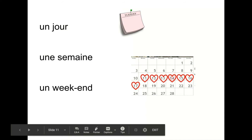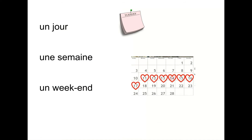Très bien. Alors, a couple more vocabulary words. A day is un jour. Un jour. A week is pronounced une semaine. Une semaine. So, in that song we just listened to, he said, il y a sept jours dans une semaine — there are seven days in a week. And then finally, un weekend. Un weekend is the word for weekend.